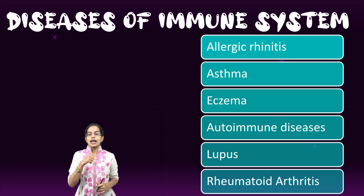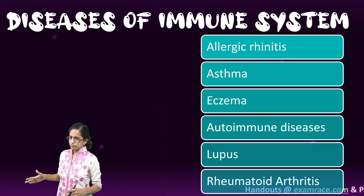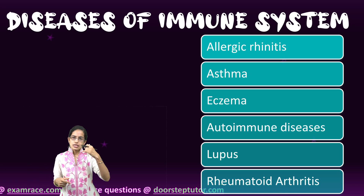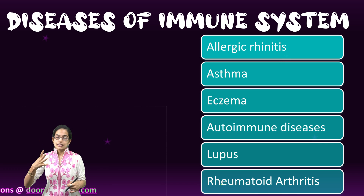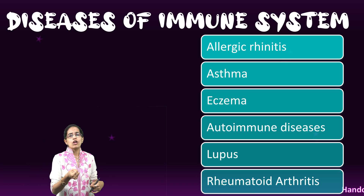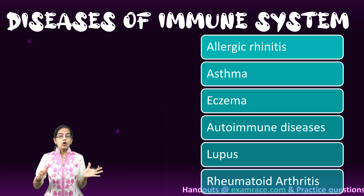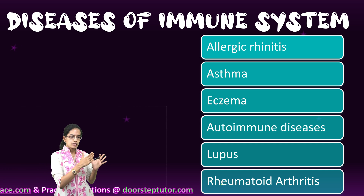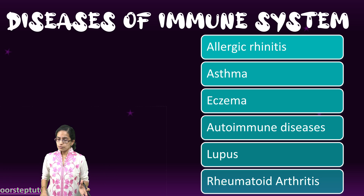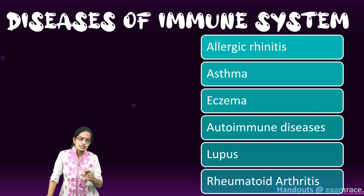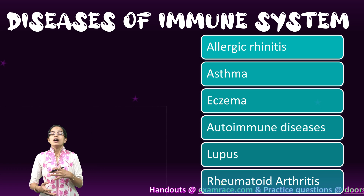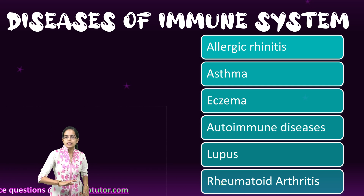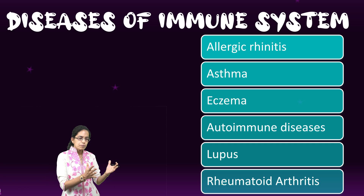Diseases resulting from a weak immune system include allergic rhinitis — inflammation of the nasal passages — as well as asthma and eczema. Autoimmune diseases such as lupus and rheumatoid arthritis are also examples of disorders resulting from an impacted immune system. These can be diagnosed through blood tests or skin allergy tests. One preferred method of treatment for autoimmune diseases is monoclonal antibodies.